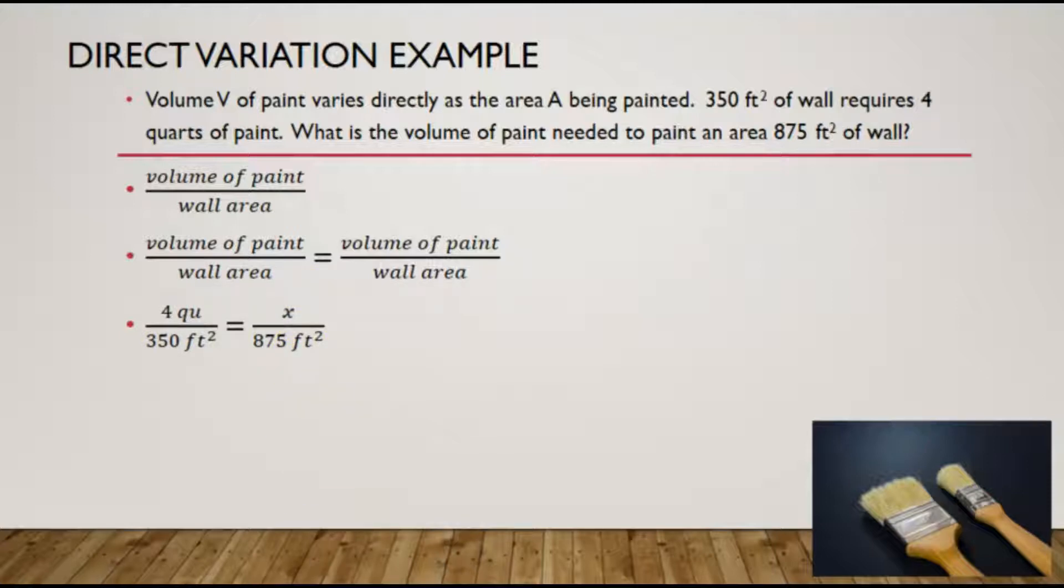To solve this setup, we'll use cross multiplication. Multiplying, or the product of the extremes, is equal to product of the means. Results in the following equation: 875 times 4 is equal to 350 times x.